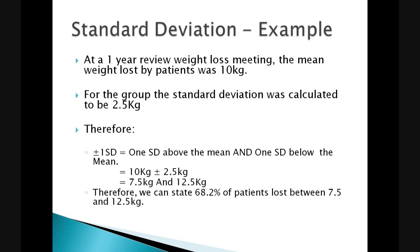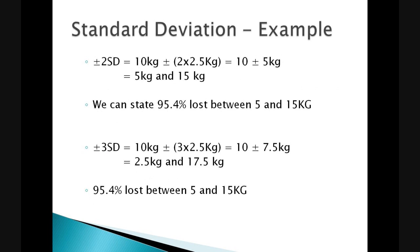Let's next consider an example. At a weight loss club the mean weight loss by patients was 10 kilograms. The standard deviation was calculated for the group to be 2.5 kilograms. Therefore, if we wish to calculate one standard deviation we need to add 2.5 kilograms above and below the mean. So 10 kilograms plus 2.5 gives us 12.5 and 10 kilograms minus 2.5 kilograms equals 7.5. Therefore we can state that 68.2% of the patients lost between 7.5 and 12.5 kilograms.